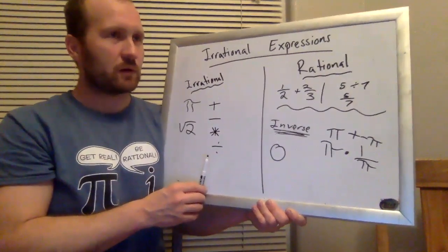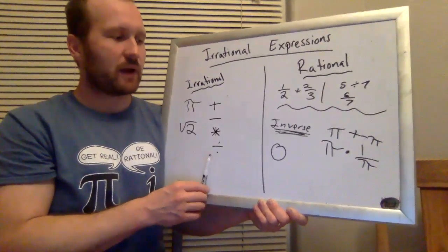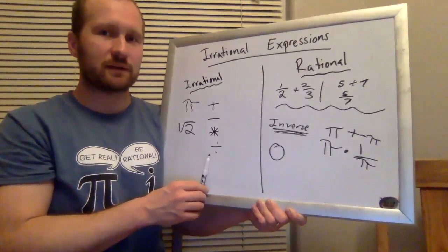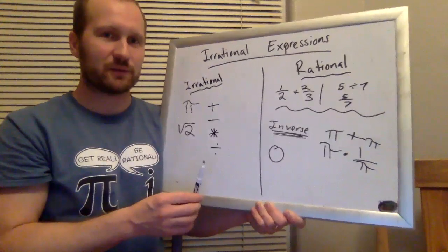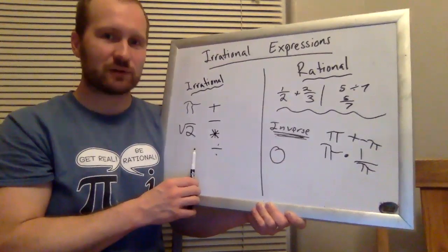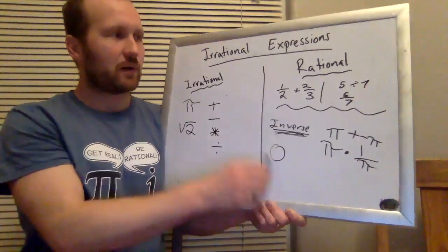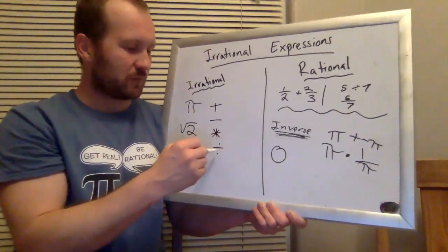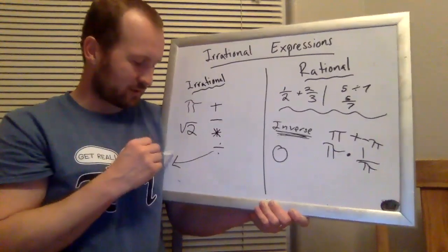And so dividing by zero is going to kind of break all of this. We're not going to get a rational number, but we're also not going to get an irrational number. So zero kind of breaks this.